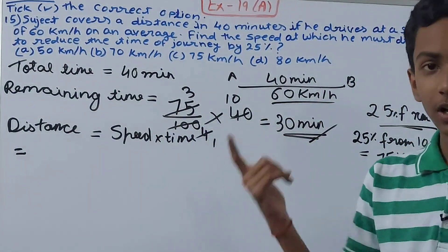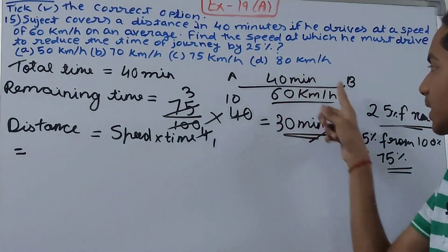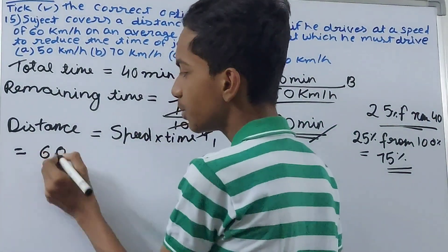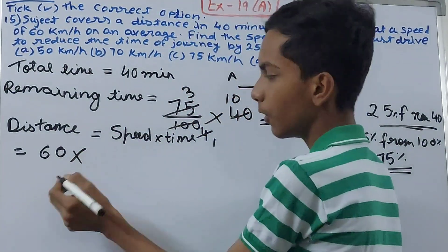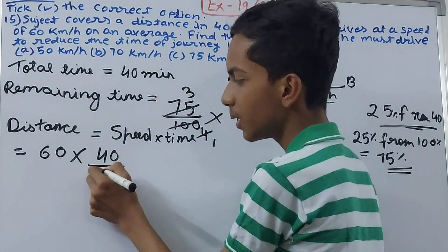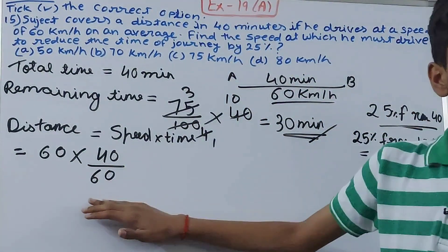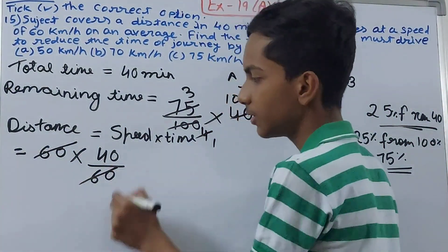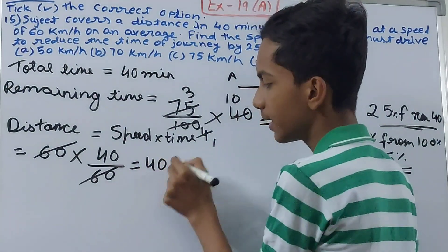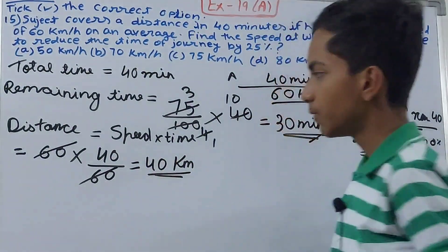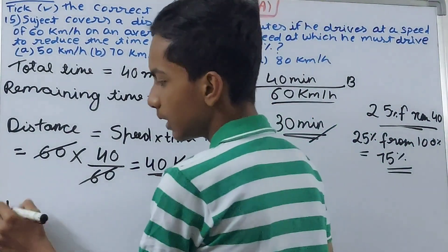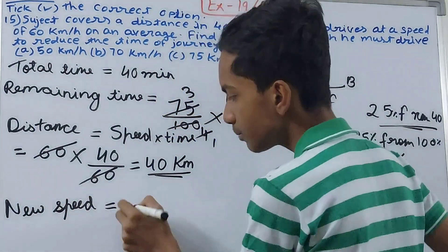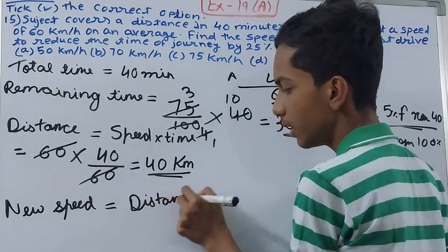Have a look at the units: minutes and hours, which is not the same, so convert minutes into hours. Speed is 60 kilometers per hour into time, which is 40 minutes. Convert this to hours, simply divide it by 60. This 60 will be cancelled and we are left with 40 kilometers. This is the distance, 40 kilometers.